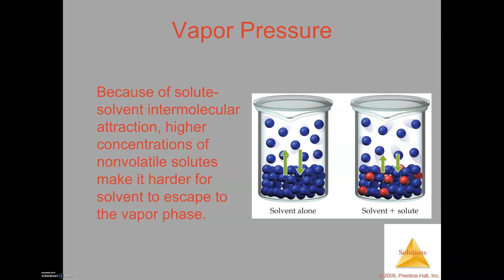What happens when you put in a solute — such as sodium chloride or glucose — is that those solute particles are going to have interactions with the solvent particles. As a result, they're going to cause the vapor pressure itself to lower by some fraction. The intermolecular forces at play within the solute and solvent particles are what causes the vapor pressure to go down for the pure solvent.